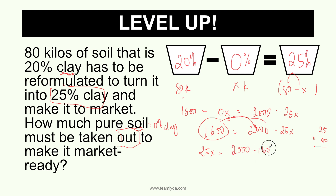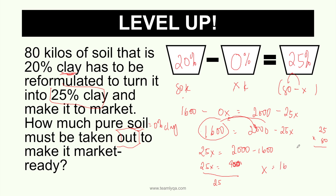So we have 25x equals 2,000 minus 1,600, which is 400. If you don't know why the signs changed, please watch the video on equalities. Then divide both sides by 25: 400 divided by 25. Four 25s make 100, so four times four is 16. Therefore x equals 16.